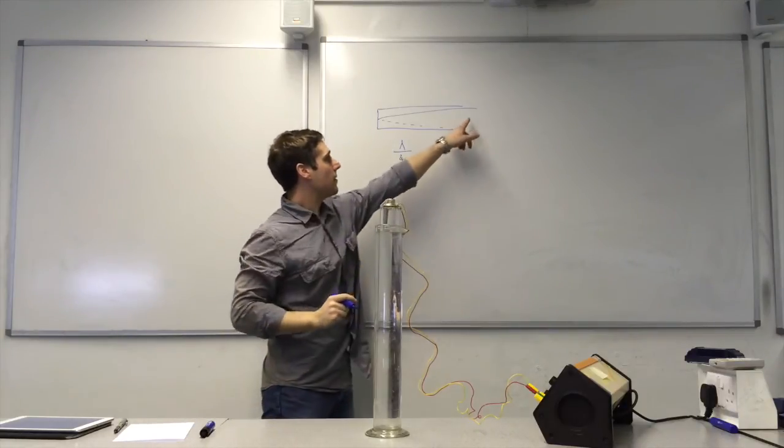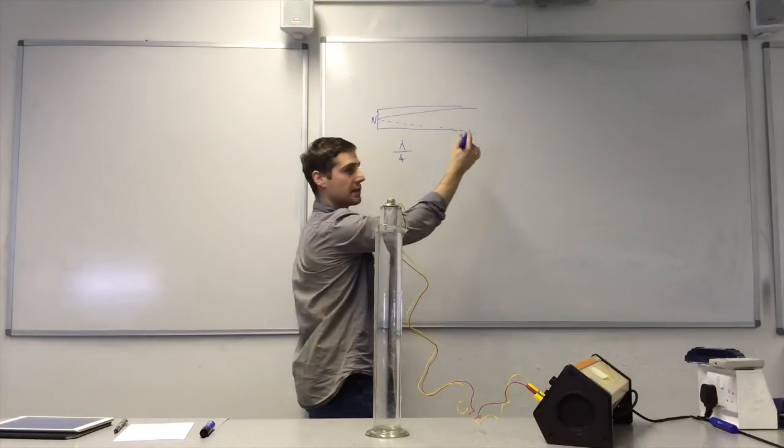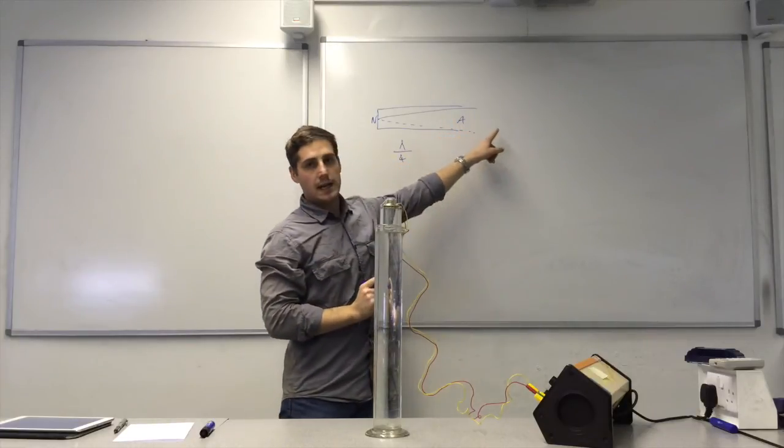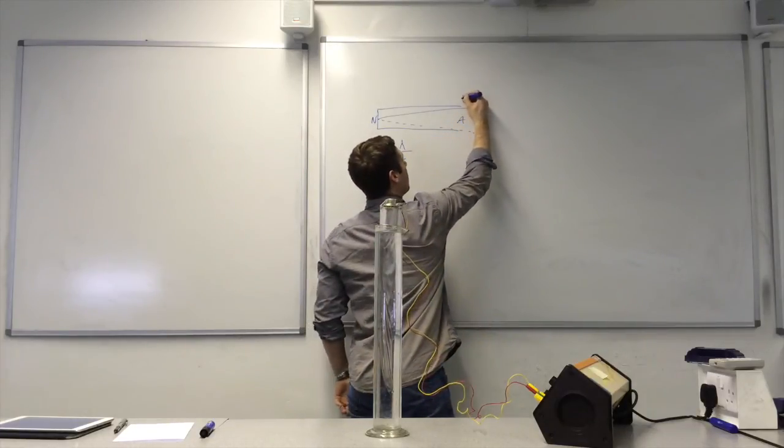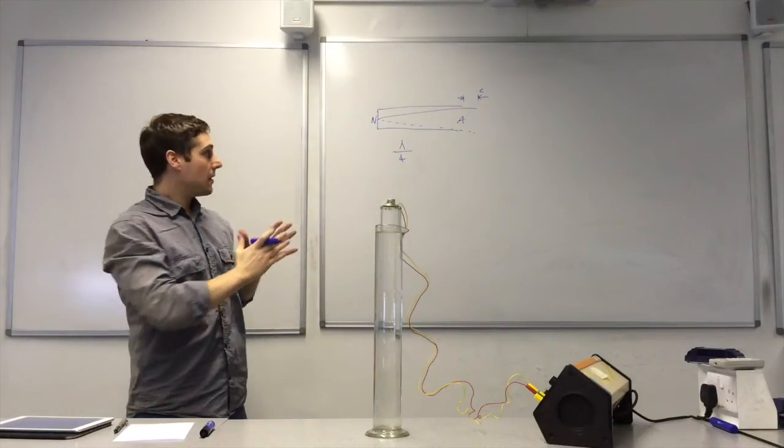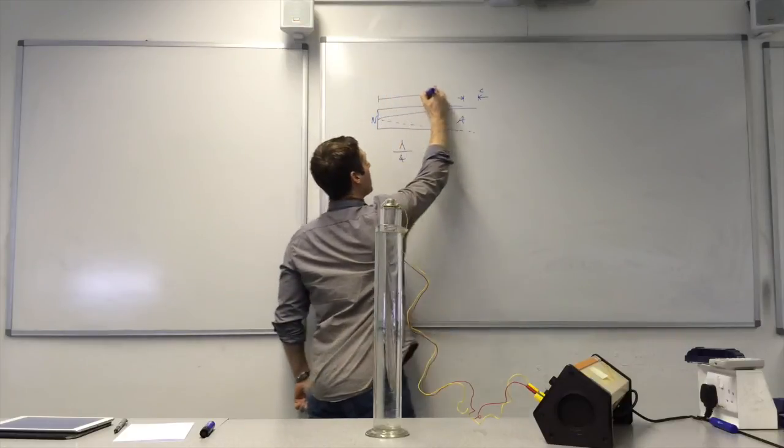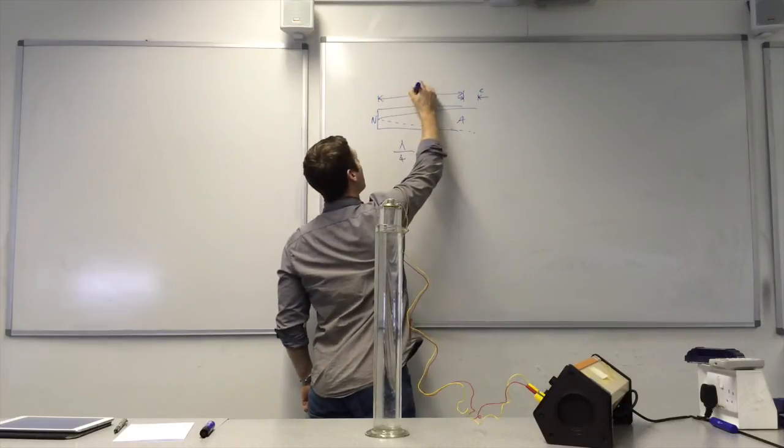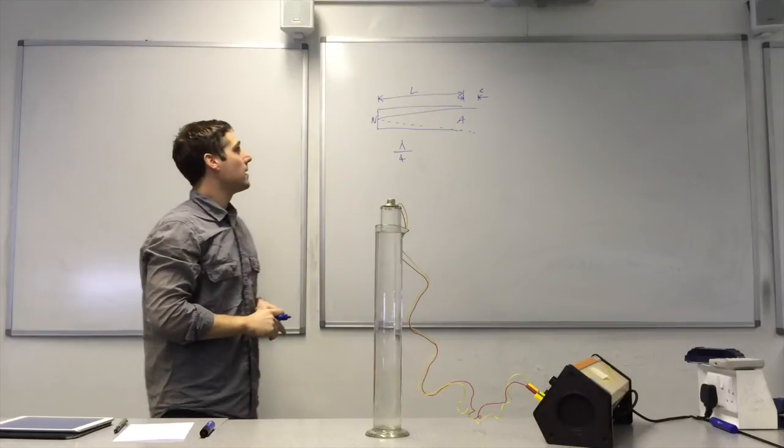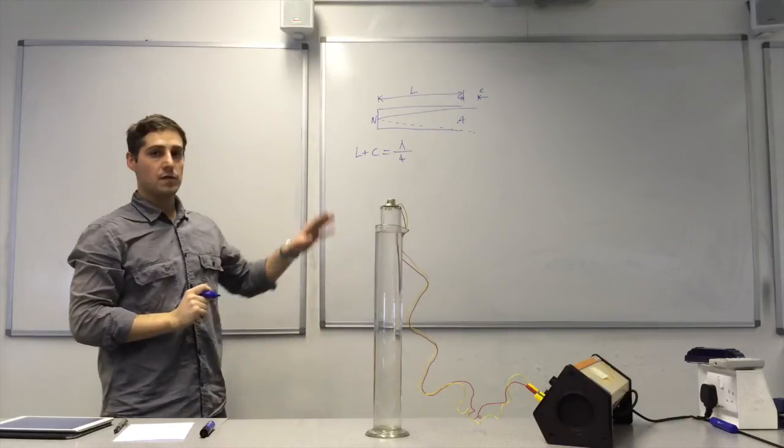So the conditions are that there's a closed end so that gives me a node here, and this is a node there so this gives me an antinode. Now that antinode actually occurs slightly outside the pipe, and therefore there's a little bit of extra length in addition to the length of the pipe itself. That needs to be included. That's an end correction there, the C. That's why I call it C for correction. So L plus C is equal to a quarter of the wavelength for the fundamental.